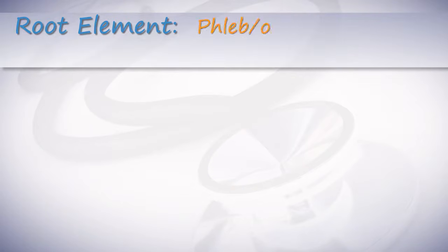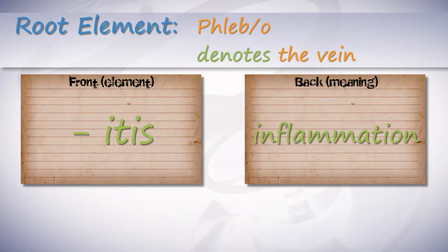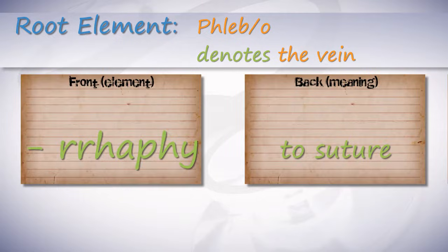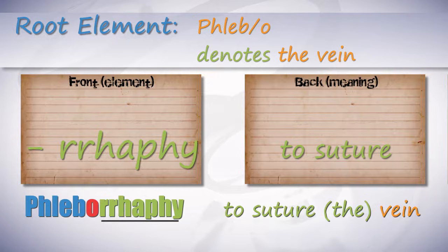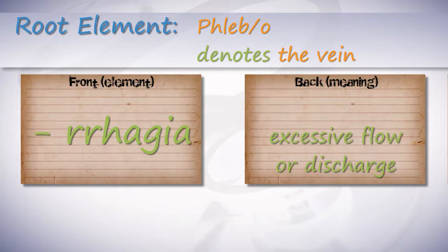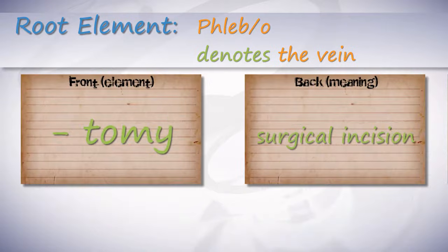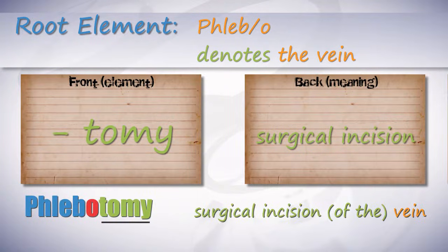Root word: phlebo. Phlebo denotes the vein. The suffix -itis means inflammation. The term phlebitis is inflammation of the vein. -rrhaphy means suture. Phleborrhaphy means to suture the vein. The suffix -rrhagia means excessive flow or discharge. Phleborrhagia means excessive flow or discharge from the vein. -tomy means surgical incision. The term phlebotomy is a surgical incision of the vein.